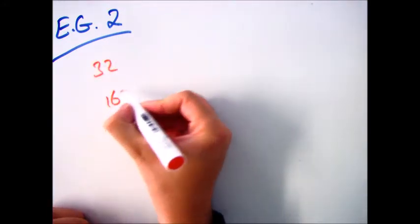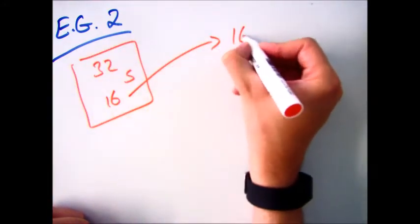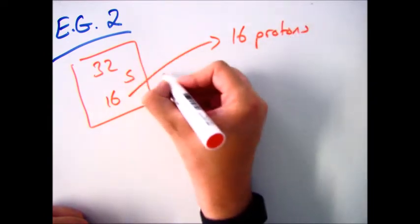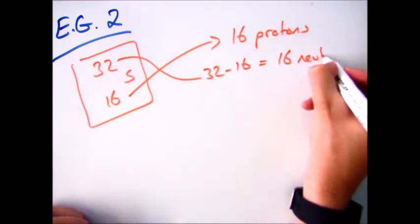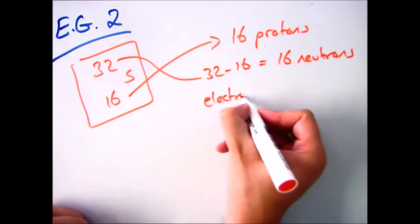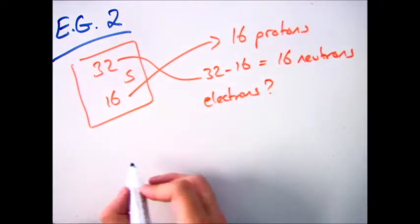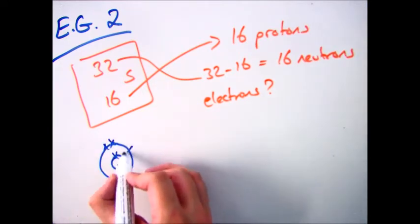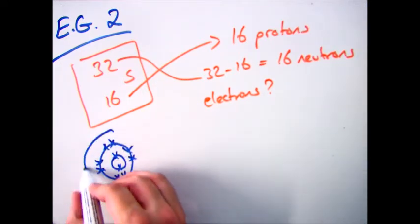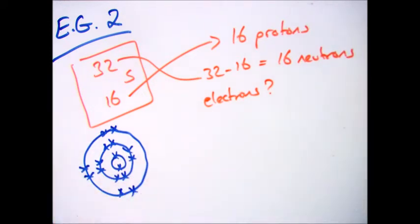So if we were to have a look at another example, in this case I'm going to go with sulfur. We have got 32 as the atomic mass and 16 as the atomic number, which means we've got 16 protons and 32 take away 16 gives 16 neutrons. But what about the electrons? So again, do the same steps — draw out the electronic configuration. We've got 16 electrons, so 2 in the first shell, 8 go into the second shell,